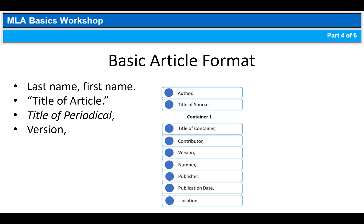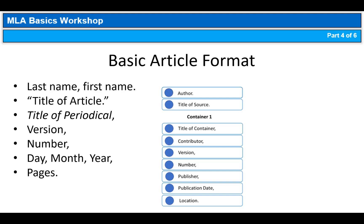In the world of periodicals, version translates into the volume number followed by a comma. After version is the number, or issue. Following the number is the date of publication followed by a comma. Finally, the last element of container 1 is the range of pages followed by a period.